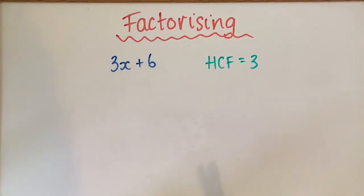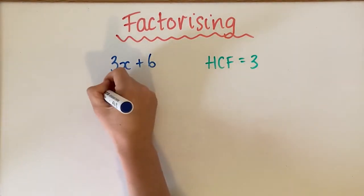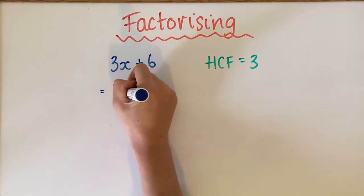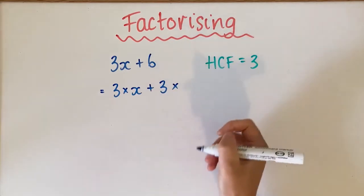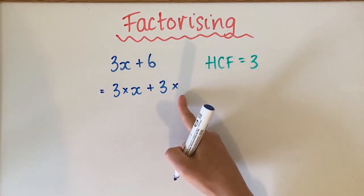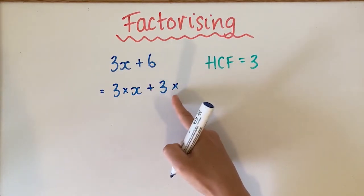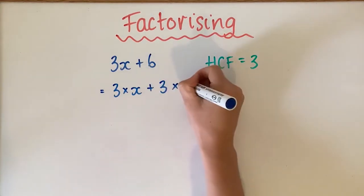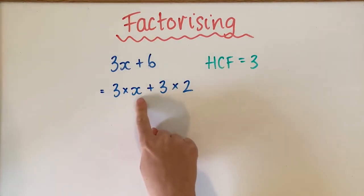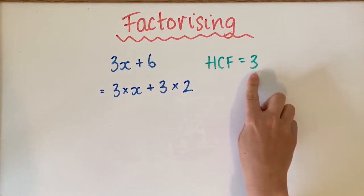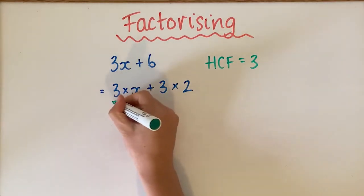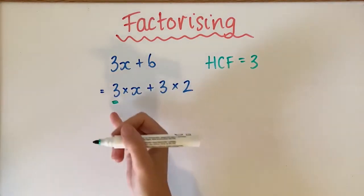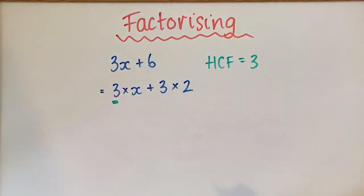Now we need to stretch this out into its factors. We're going to make it 3 times x plus 3 times 2, because 3 times 2 gives you 6. We start with the highest common factor of 3, and then we multiply it by whatever gives us 3x — so 3 times x gives us 3x.